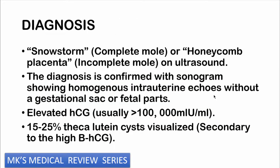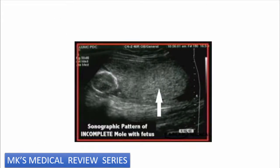When making a diagnosis, on ultrasound you may see a snowstorm appearance in a complete mole and a honeycomb placenta in an incomplete mole. Diagnosis is confirmed by sonography showing homogeneous intrauterine echoes with or without a gestational sac or fetal parts. Elevation of HCG is usually greater than 100,000 milli-international units per mL. 15 to 25% of cases have theca lutein cysts visible on ultrasound due to increased beta-HCG. Here is a sonographic picture of an incomplete mole — you can see the honeycomb placenta.